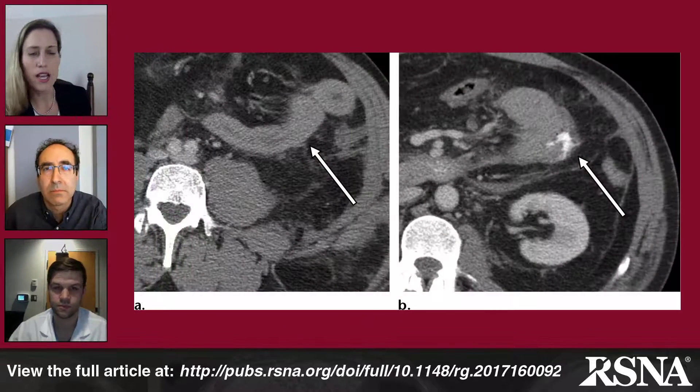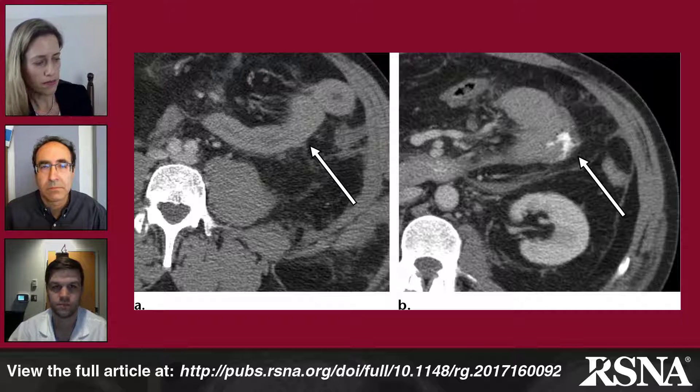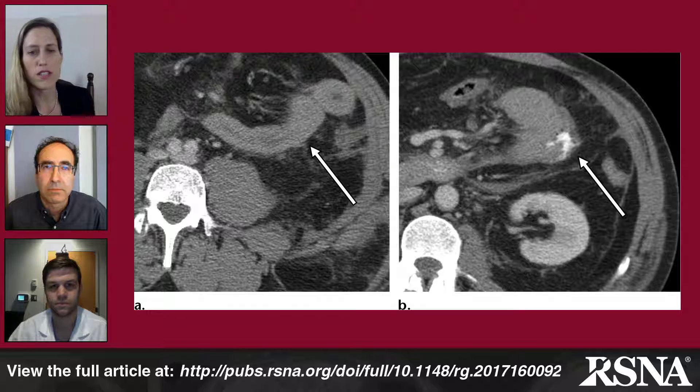Let's move on to discuss some of the findings we should be aware of when interpreting these multi-detector CT studies. The paper breaks these down into direct and indirect findings. The direct findings for blunt bowel and mesenteric injury include discontinuous bowel enhancement and free air. Figure 1 highlights the discontinuous bowel wall. On image A, you'll see jejunum wall thickening, and slightly more superior in image B, you see oral contrast extravasating through a focal defect in the jejunum.